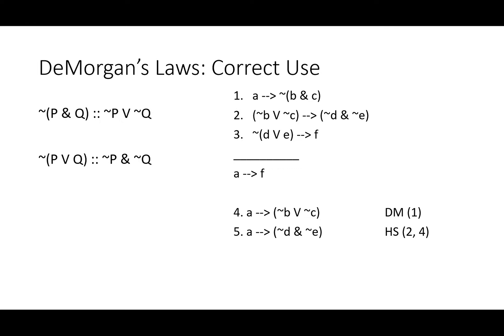Now hypothetical syllogism leaves us with if A, then not D and not E. Now we look at the antecedent in line three. It matches DeMorgan's other law. And we look at the consequent of line five. It matches the other side of that same law. These two statements are logical equivalents. And once again, we can use DeMorgan's on either line five or line three to get matching statements and set up a hypothetical syllogism. We'll stick with line five and get if A, then it's not the case that D or E. Well, now we can go straight from straight to if A, then F with another hypothetical syllogism.